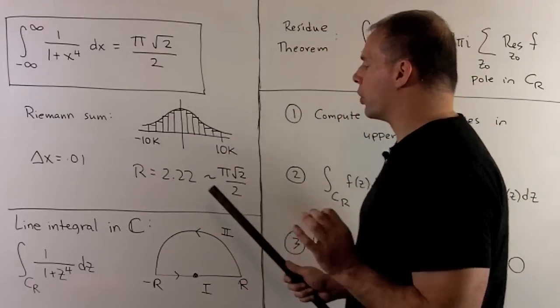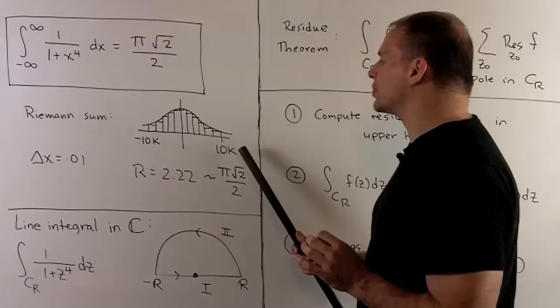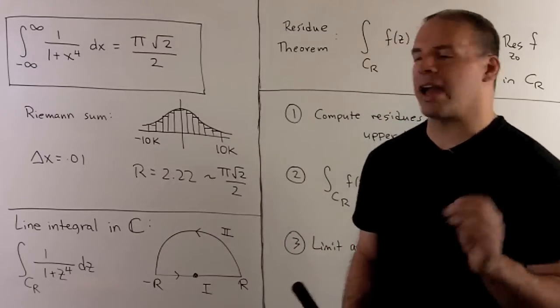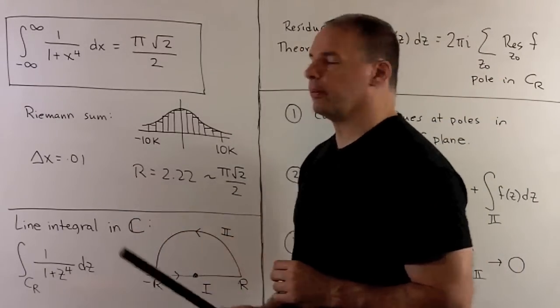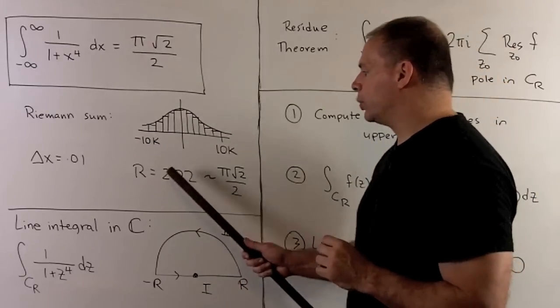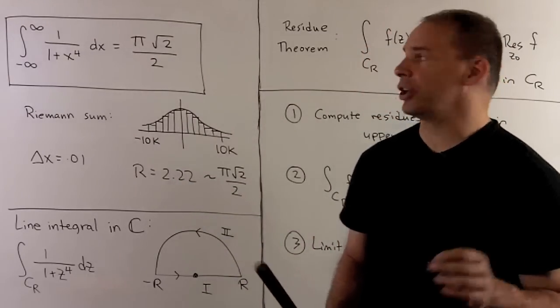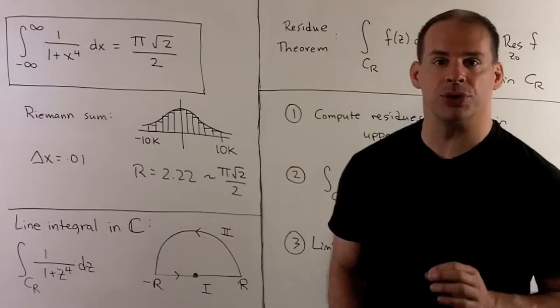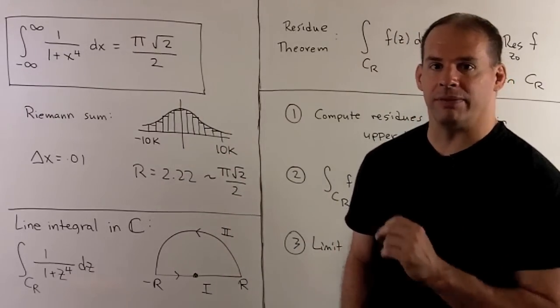If we have the graph of our function, I'll go from minus 10,000 to 10,000. We're going to fill it with rectangles with base 0.01. Push it through. What comes out is 2.22. We know that's a good approximation for pi times square root of 2 over 2, so now I believe this.